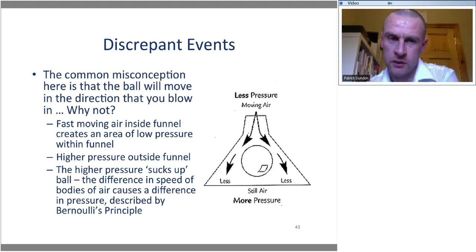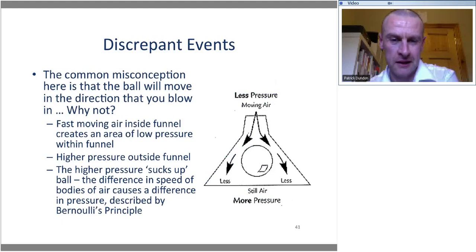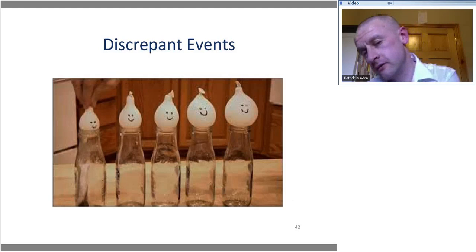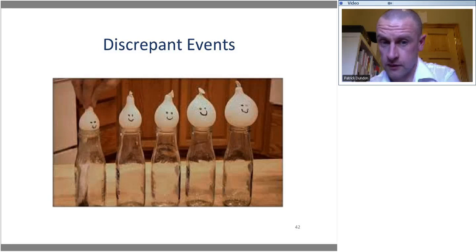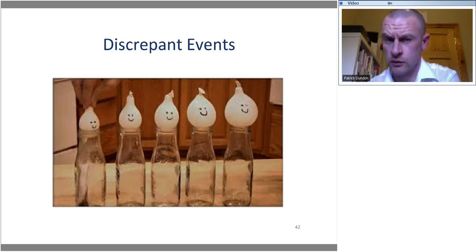Other discrepant events: take a glass bottle or conical flask, put a small amount of water in the bottom, evaporate that water, then place a balloon in the neck. The evaporation removes most of the air, creating a partial vacuum, which sucks the balloon into the bottle over time. This is completely counterintuitive because the balloon is bigger than the neck. Students really like that when it's done as a demonstration of atmospheric pressure.